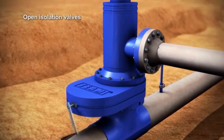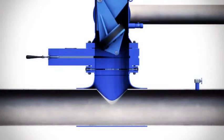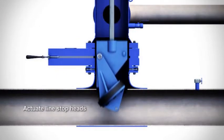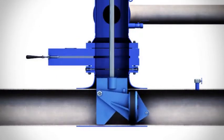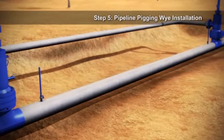Open the isolation valves. Lower the line stop heads into the pipeline, diverting the flow through the bypass piping. When the upstream and downstream line stop heads are fully actuated, isolation is achieved.